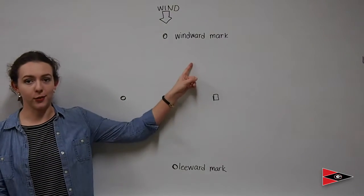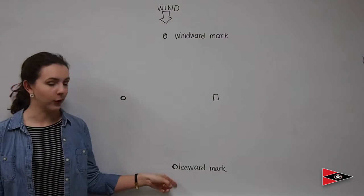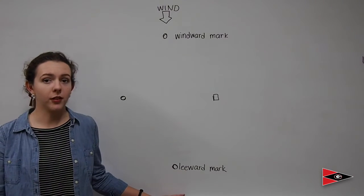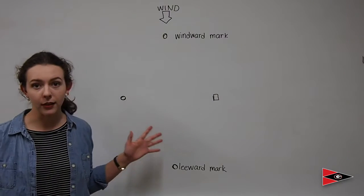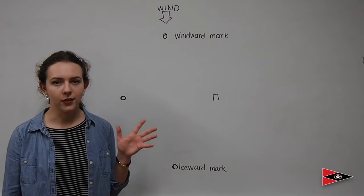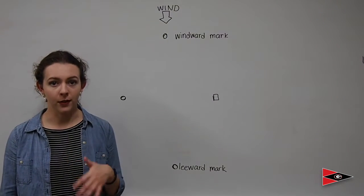Starting with our top and bottom marks, this is going to be your windward mark up here, and your leeward mark down there. The terms windward and leeward are applied to many things in sailing, including these two marks here. Think of windward as closest to the wind, and leeward as farthest from the wind.